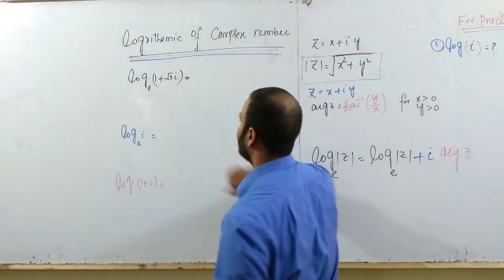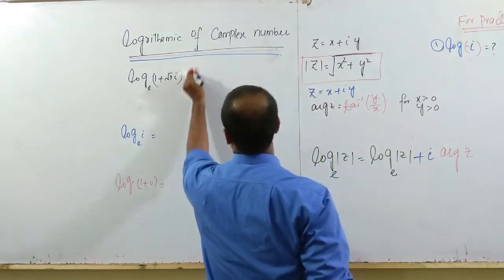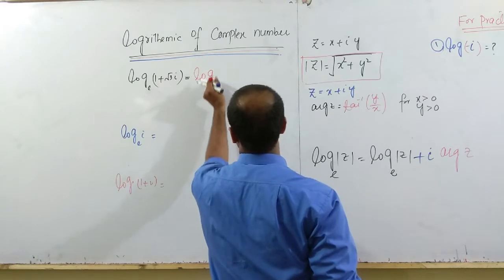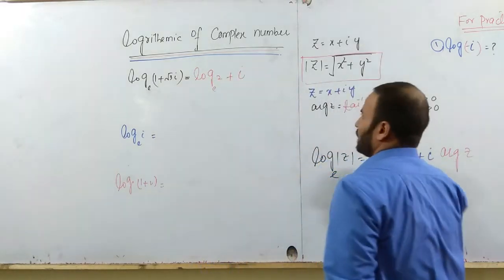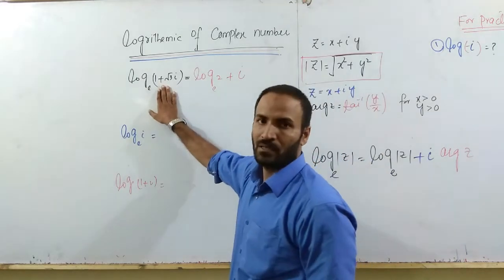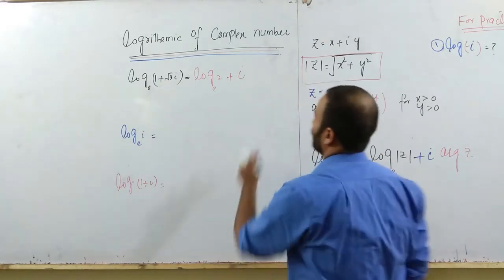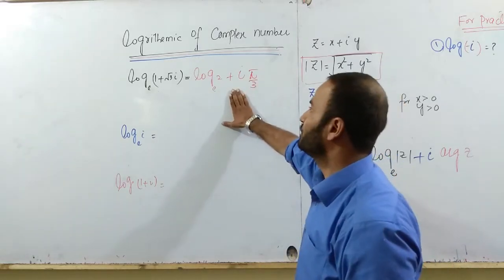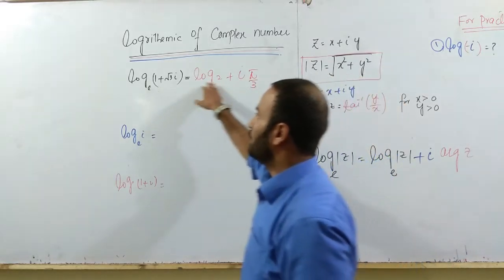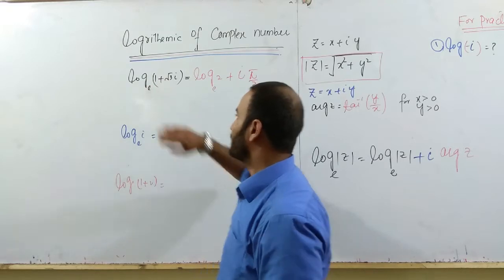What is the magnitude of this complex number? That is 2. Log of 2 plus iota. And what is the argument of this complex number? That is pi by 3. So this is the answer for the logarithm of the complex number.